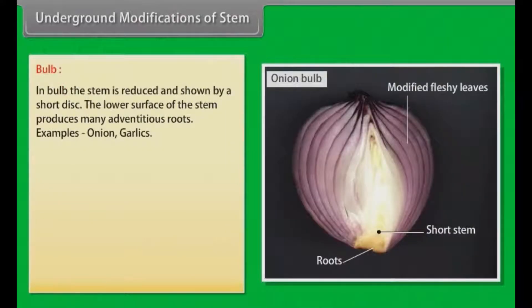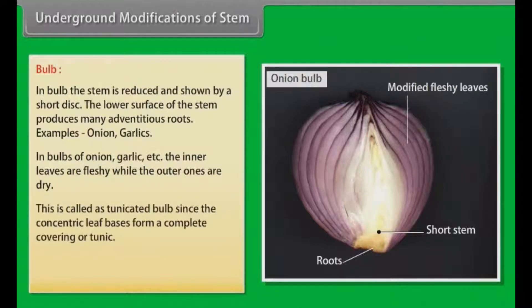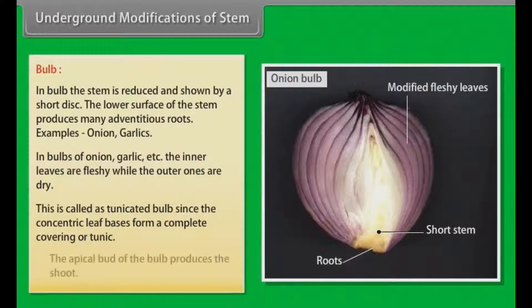In a bulb, the stem is reduced and shown by a short disc. The lower surface of the stem produces many adventitious roots. Examples: onion, garlic. In bulbs of onion, garlic, etc., the inner leaves are fleshy while the outer ones are dry. This is called a tunicated bulb since the concentric leaf bases form a complete covering or tunic. The apical bud of the bulb produces a shoot.